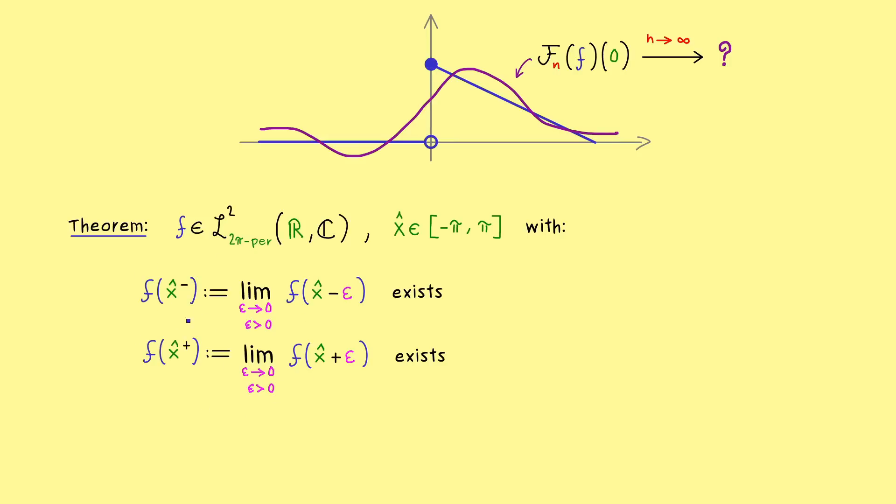Obviously we can immediately find these values in our picture: this one is f of x-hat minus and this one here is f of x-hat plus. Moreover, for a point where the function f is continuous, we know that both values coincide. However, for points x-hat where f is not continuous, it simply does not matter where the value of f at x-hat lies. Indeed, you can just remember that the Fourier series cannot see such a single value; it can only see the two limits.